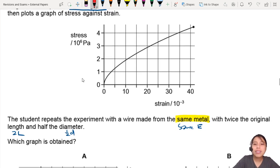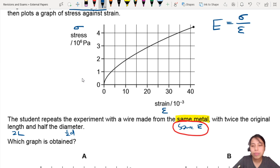Same metal means same Young's modulus. And what is the Young's modulus? Young's modulus is the ratio of stress over strain. Oh, by the way, this is stress, this is strain. So if it's the same metal, means the ratio of stress over strain should be the same.